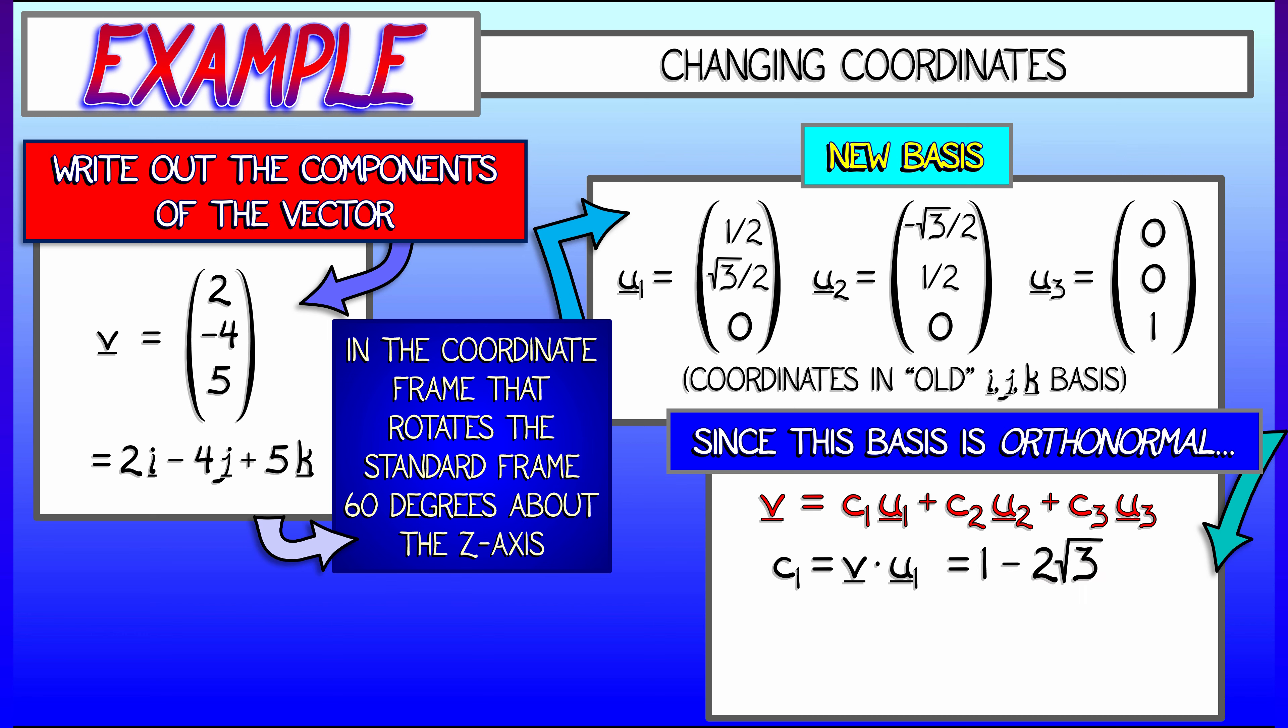The first coordinate c1 is v dotted with u1. That's 2 times 1 half minus 4 times root 3 over 2 plus 5 times 0. That simplifies to 1 minus 2 root 3. And we can get the other coordinates the same way. c2 is v dot u2, which is minus root 3 minus 2. c3 is v dot u3, and that's 5. That's the same as the old k coordinate because it's the same basis vector.